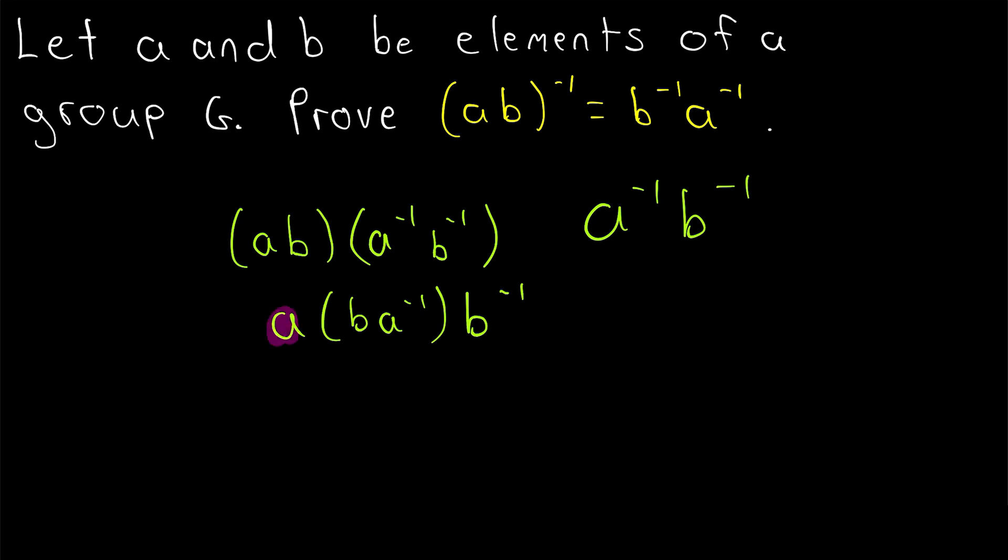But what we would really want to do is combine A with A inverse so that they go to the identity and combine B with B inverse to produce the identity as well. But we can't do that because groups are not always commutative. So we can't just switch around the order that we're combining these elements in. All we can do is change our parentheses, but we can't flip the order of the elements around.